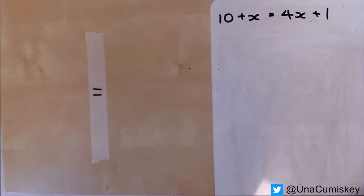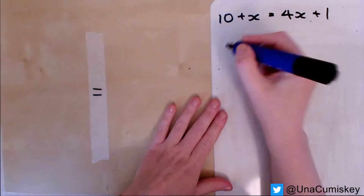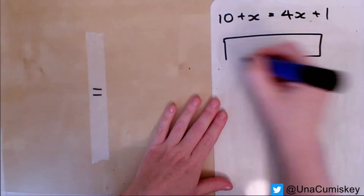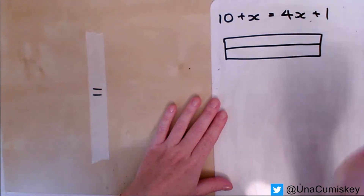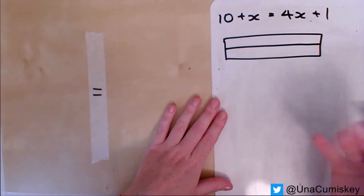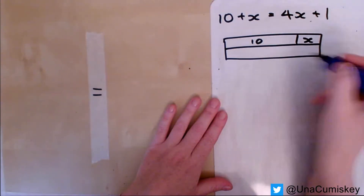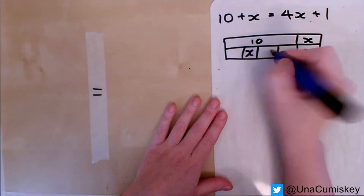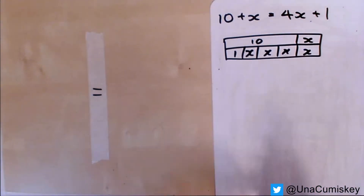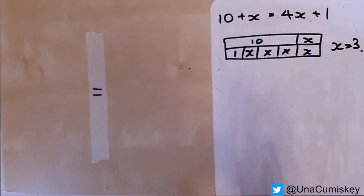Moving on to using zero pairs with algebra tiles for solving linear equations, I'm going to start with the equation 10 + x = 4x + 1. I would usually represent this in class using a bar model. Bar models are absolutely fantastic and I would not leave them out even when using algebra tiles — it's good for students to be able to represent things in more than one way. On one side we have 10 + x, on the other we have 4x + 1, and most students can see clearly that x equals three.